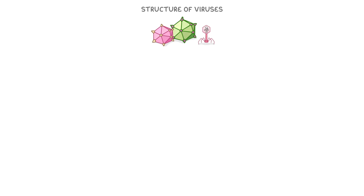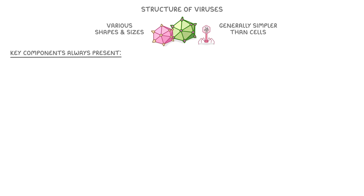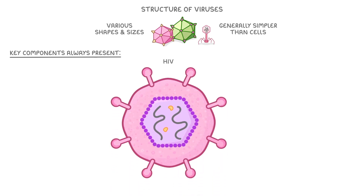Next, let's take a look at the structure of viruses. Viruses come in various shapes and sizes and they're generally simpler than cells, but they have some key components that are always present. Let's take HIV, the virus that causes AIDS, as an example in order to explore these different components.